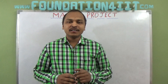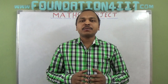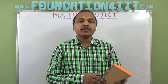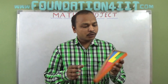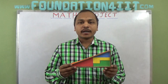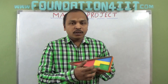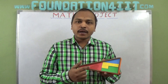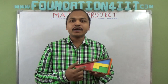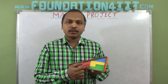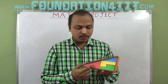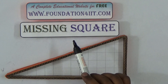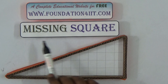Welcome to this educational channel. In this video I will explain a maths project called the missing square puzzle. Here is our model — a right angle triangle divided into four parts. If you cut and rearrange in a different way, you will get one extra square, or one square will be missing. I will explain this missing square puzzle now.